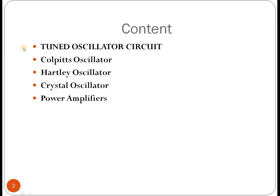First, let's look at the content. The first topic is about the tuned oscillator circuit, then the Colpitts oscillator, the Hartley oscillator, the crystal oscillator — these are different types of oscillators. Finally, we will start with power amplifiers, giving an overview, with the remaining part discussed next week.